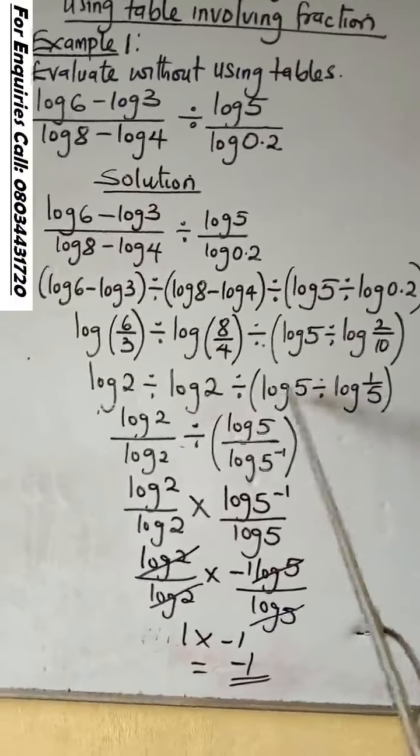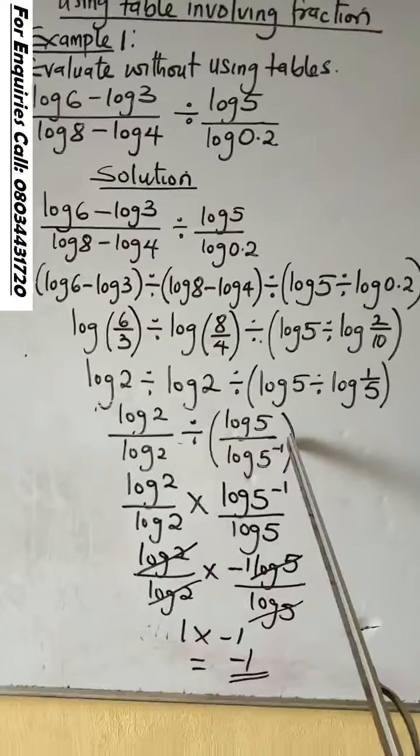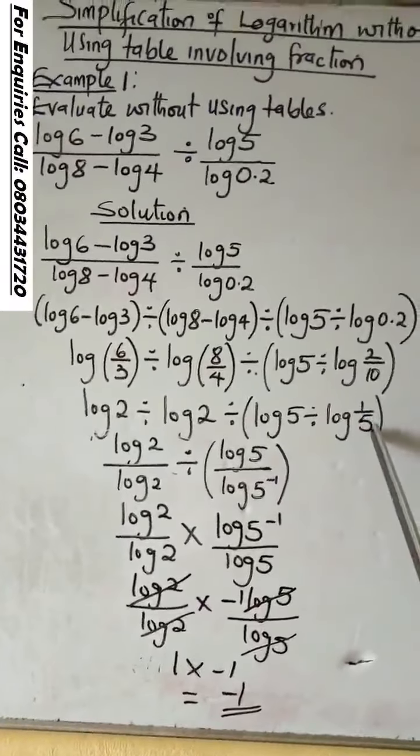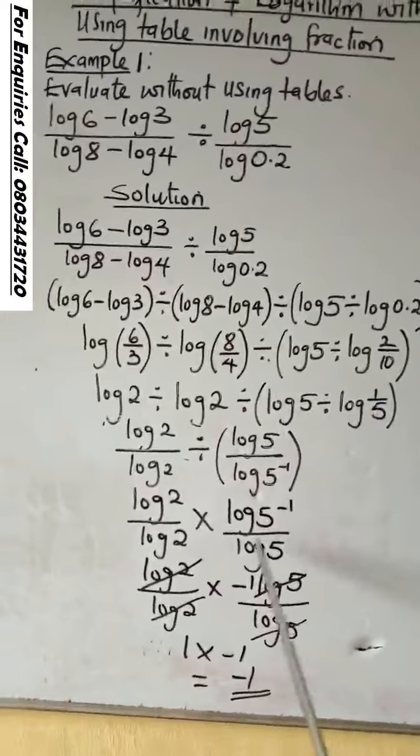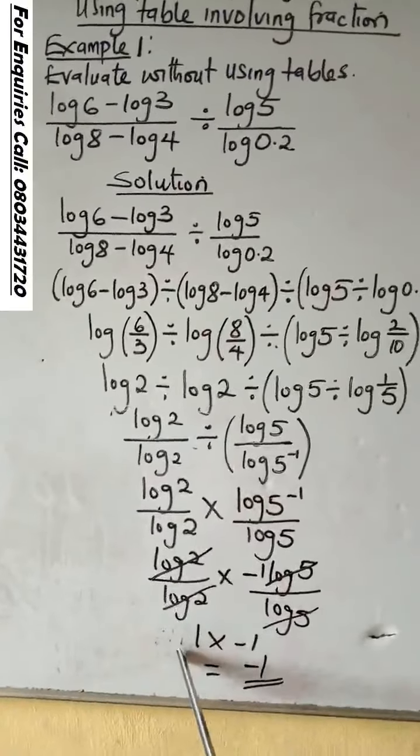Log 5 divided by log 5 raised to the power minus 1. Change 1 over 5 to this form. The log 2 will divide log 2. It will cancel to give us 1.